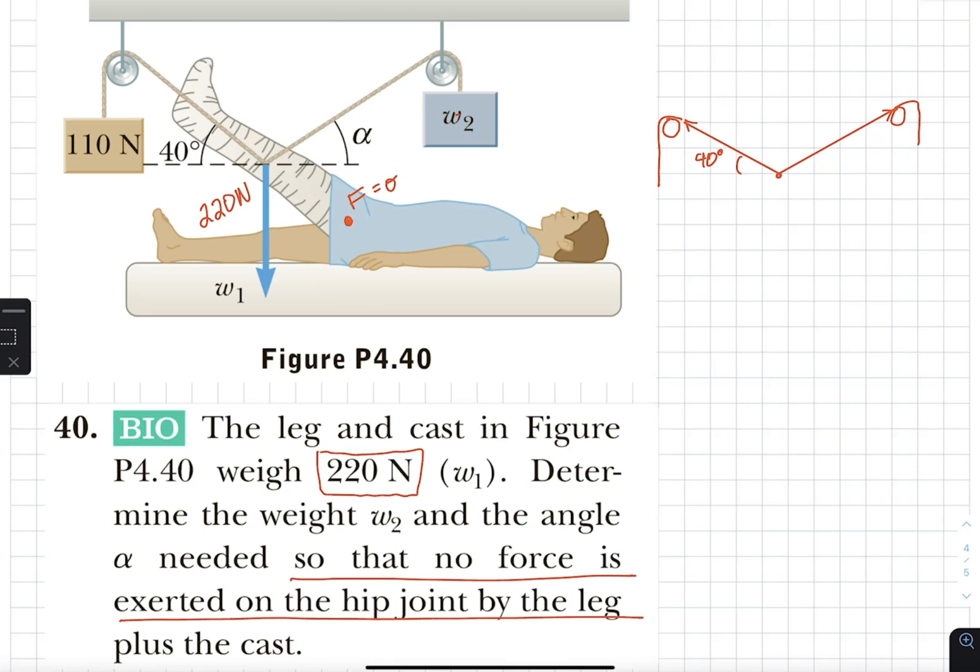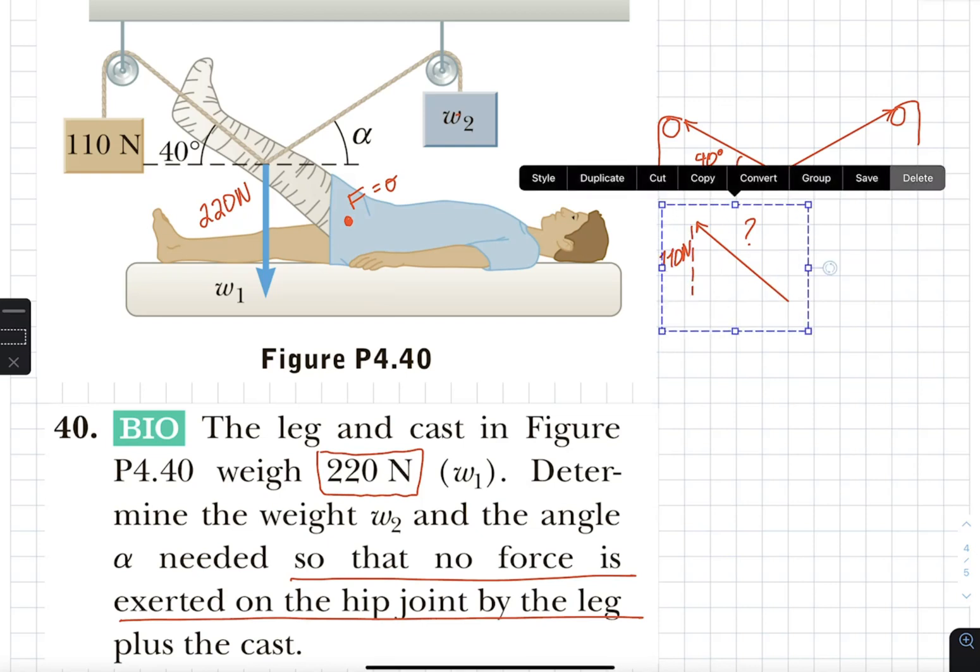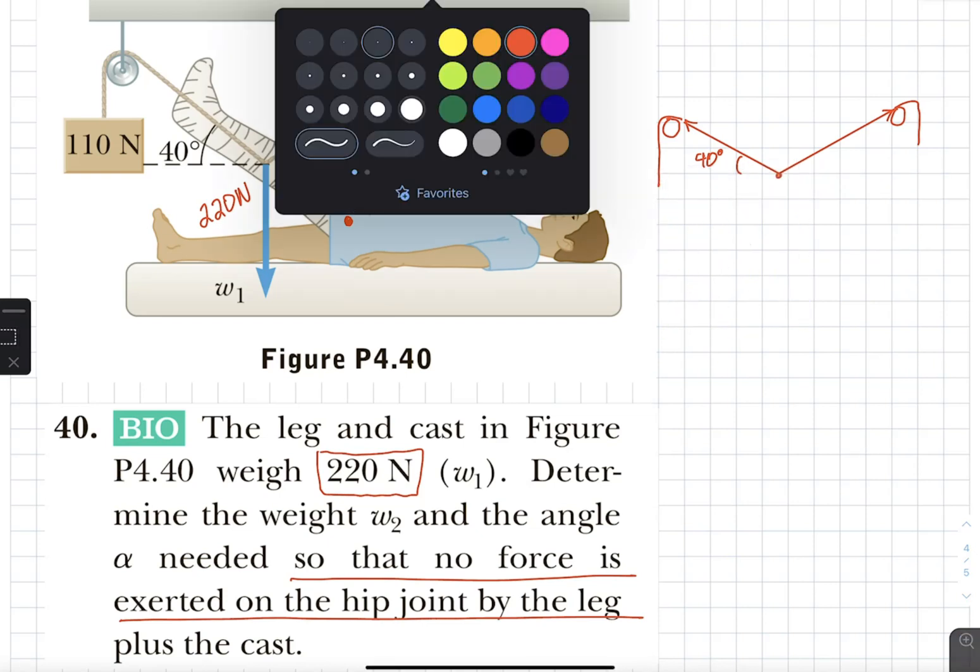Now the misconception here, and if you remember we encountered that in class, if you draw it incorrectly and say that this is 110 newtons and then this is something different, then you are going to be in trouble. What we need to realize is if I look at this rope,